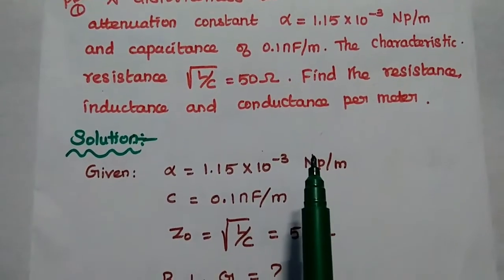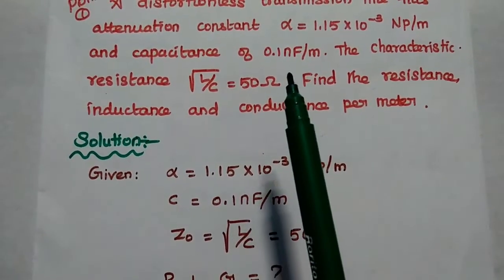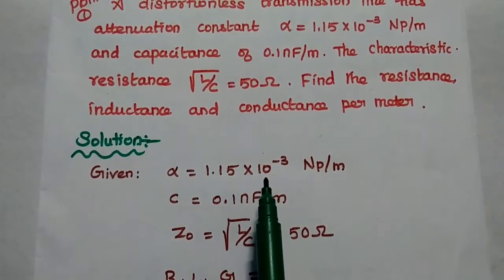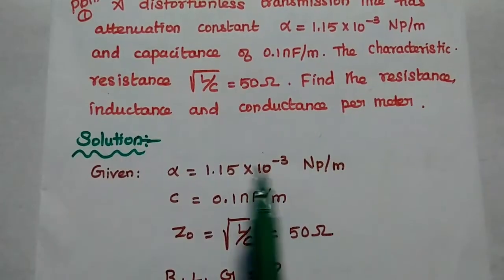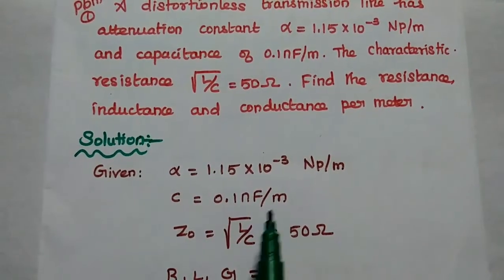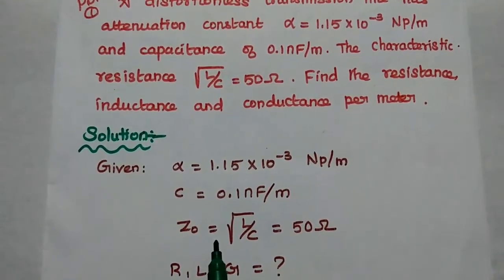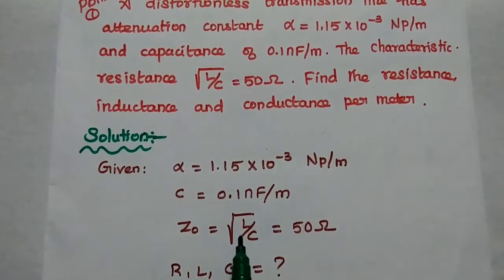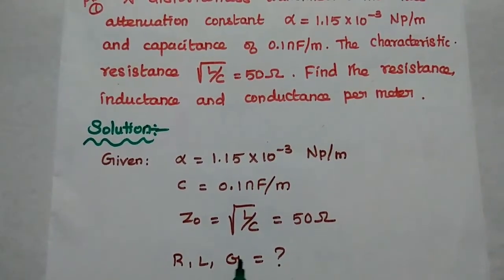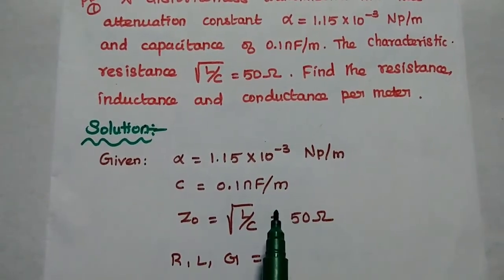In this problem, let's start with the given data. Alpha is equal to 1.15 × 10⁻³ neper per meter. Capacitance C is equal to 0.1 nanofarad per meter. And the characteristic impedance Z0, that is square root of L by C, is equal to 50 ohm. We are going to find out the resistance, inductance, and conductance using these three values.